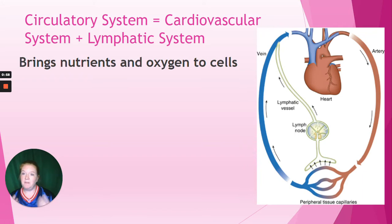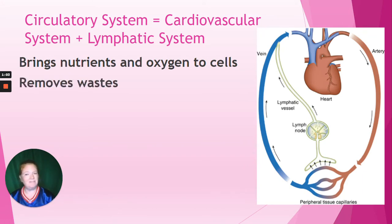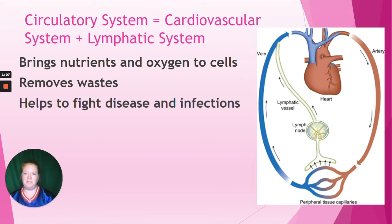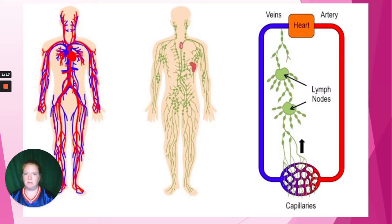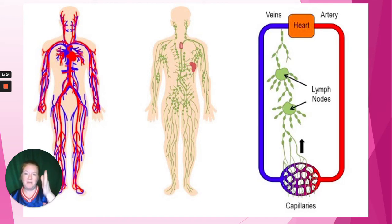What is the function? It brings nutrients and oxygen to cells, removes waste like carbon dioxide, and helps to fight disease and infection by bringing immune cells where they need to go. The main organ is the heart. We have the cardiovascular system with the heart, arteries, and veins, and the lymphatic system with lymph nodes and lymph vessels. Together they make the circulatory system.